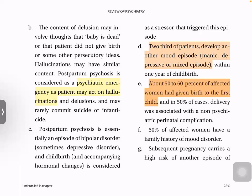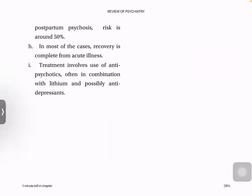Postpartum psychosis is very severe and occurs within two to three weeks of delivery. The patient has insomnia, fearfulness, and emotional lability, followed by delusions and hallucinations. The content may involve thoughts that the baby is dead, denial of having given birth, or persecutory ideas. This is considered a psychiatric emergency, as patients may rarely commit suicide or infanticide. Postpartum psychosis is seen as an episode of bipolar where childbirth is the stressor. Two-thirds of affected patients develop other mood disorders such as mania or depression. About 50–60% of episodes occur with the first child, and 50% of affected women have a family history. Treatment is an antipsychotic in combination with lithium and possibly an antidepressant.